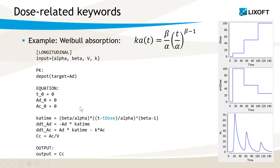Let's now have a look at two small examples. The dose-related keywords can be useful for modeling custom absorptions for a single type of administration. For instance, the Weibull absorption model describes an absorption delay with a time-varying absorption rate that follows this formula, where the absorption rate Ka changes in a phenomenological way via a Weibull function. A model using this absorption is written here as an ODE system with a depot compartment in which the amount of drug is the variable AD, and a central compartment with an amount AC. The transfer of drug from the depot to the central compartment is described using the time-varying rate constant Ka(time).